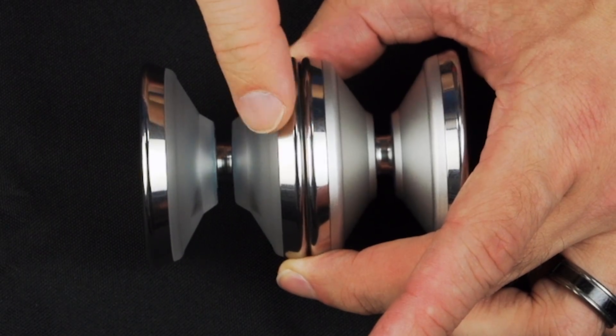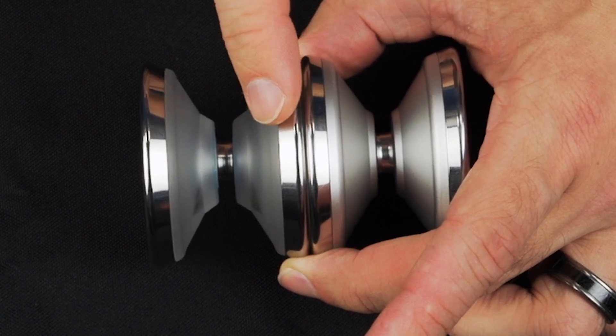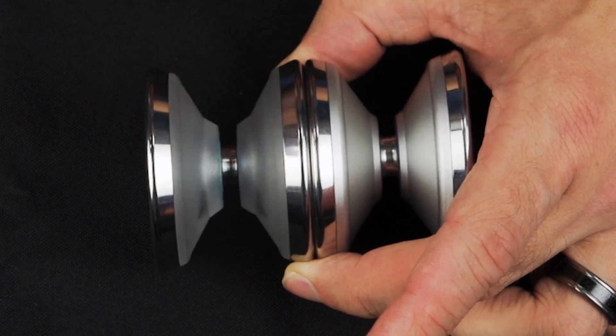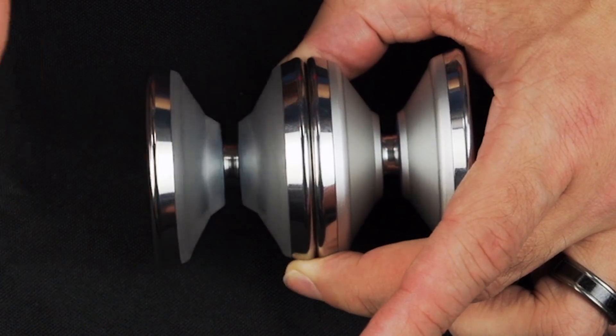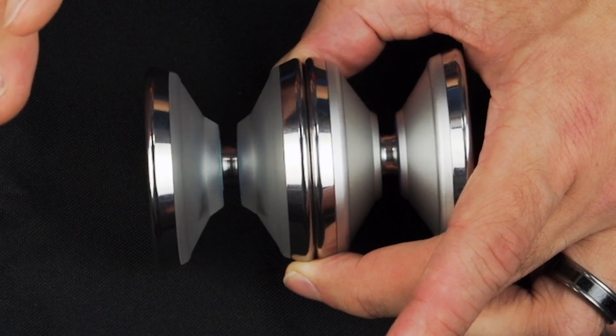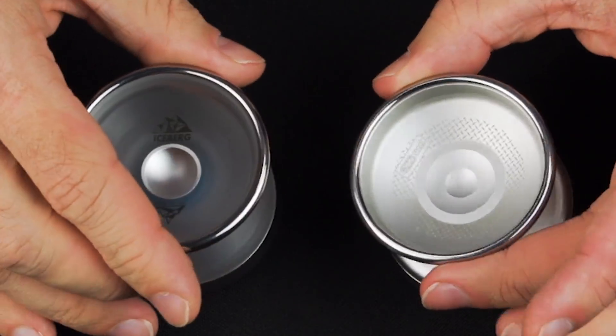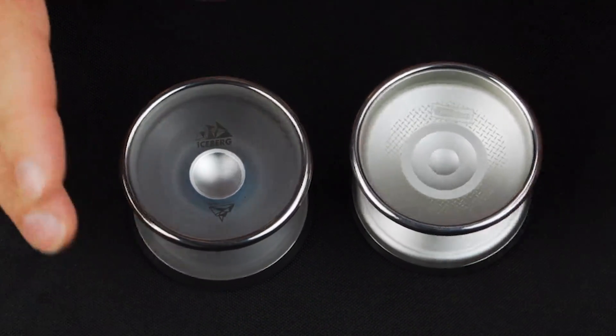You'll also notice that the rims are thicker on the Iceberg, and that's because the plastic body is lighter than the aluminum body, so they can put more weight in the rim. That's the real key to what makes the Iceberg a superior yoyo overall.